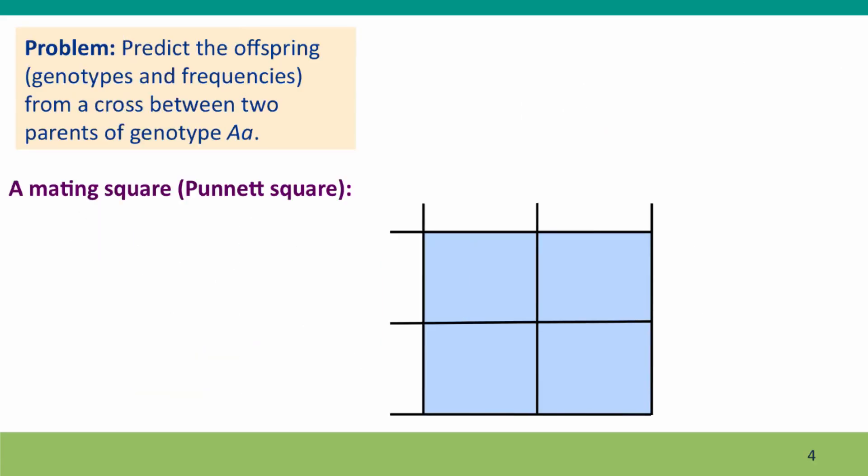Here's our first genetics problem. We want to predict the offspring, both the genotypes and the frequencies of these genotypes in the offspring, of a cross between two parents and both parents have the simple genotype big A little a.